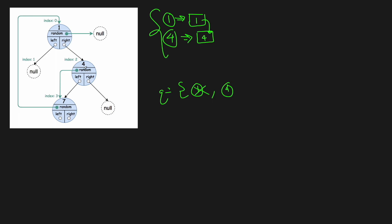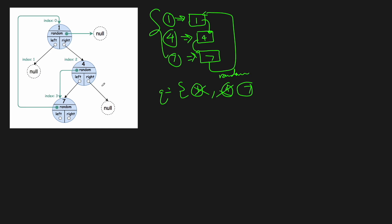We process node 4 next. It has no right child, so nothing to do there. It has a left child, so we copy it, add it to the queue, and link the left child of the copy of node 4 to the copy of node 7. Node 4's random pointer also points to node 7, which we've already copied, so we don't need to copy it again. Then we process node 7, which has no left or right children. Its random pointer points to node 1, which is already copied, so we just update the random pointer to point to the copy of node 1. That's the BFS approach — copy things if they don't exist, then update all pointers in the copy.